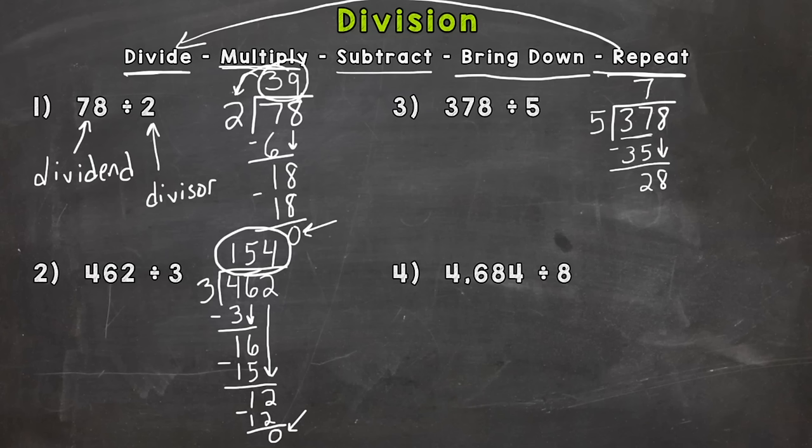So now we have 28 divided by 5. How many groups of 5 can we pull out of 28? Well 5. 5 times 5 is 25. Subtract and we get a 3. We went all the way over to the ones place. Nothing else to bring down.